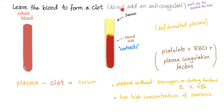Leave the blood to form a clot in the test tube — do not add an anticoagulant. In other words, do not use the purple top tube, because it contains EDTA, an anticoagulant. Use a tube with no anticoagulant. Leave the whole blood, and after a while it will form a clot — a thrombus. The thrombus will then contract, and when it contracts, the remaining part of the plasma is called the serum. Serum is defibrinated plasma — plasma without fibrin and without the coagulation factors. The blood clot contains platelets, red blood cells, and plasma coagulation factors. Serum is just the plasma with no fibrin or coagulation factors. Plasma minus clot equals serum.